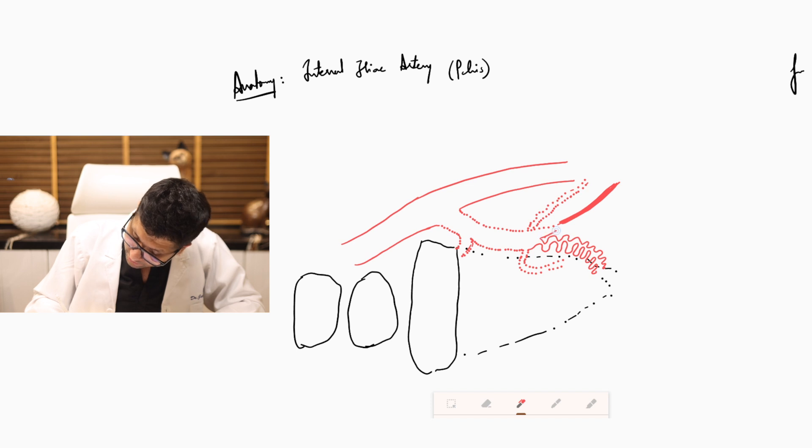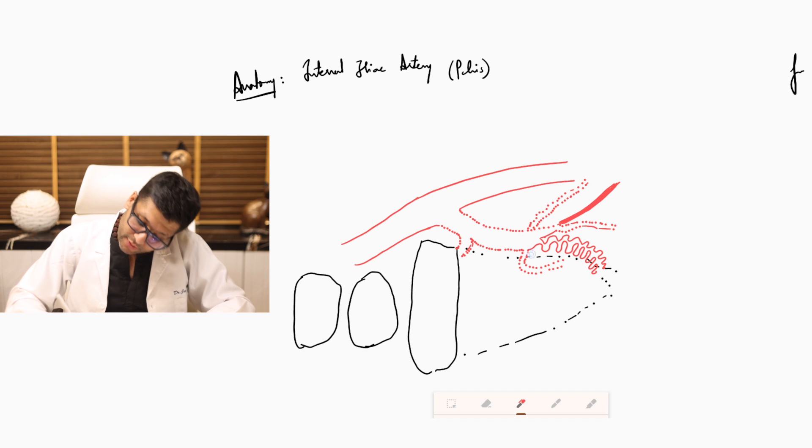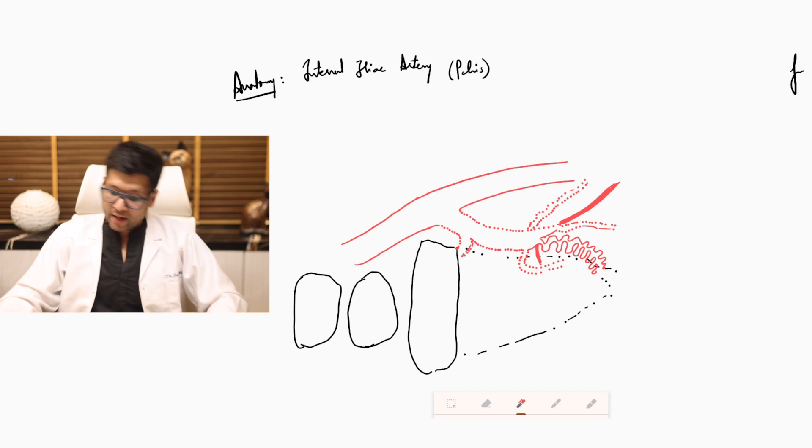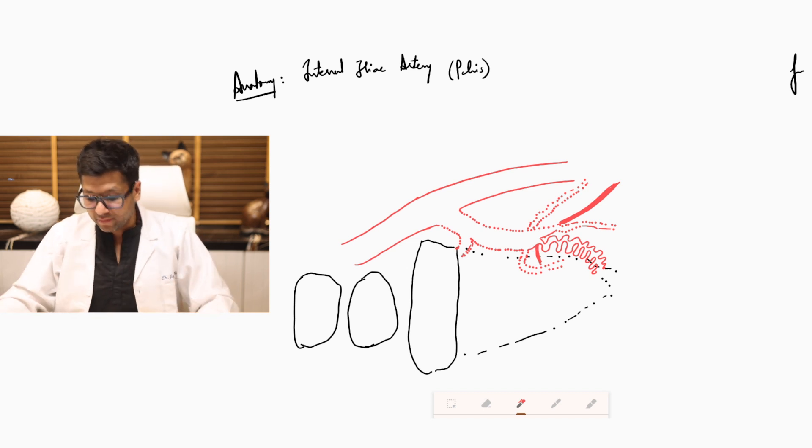Sometimes it will also give rise to a small vesicle branch, which continues there. Infrequently, it will give rise to a vessel called the middle rectal. I am drawing it as a dark vessel because it is very infrequent.